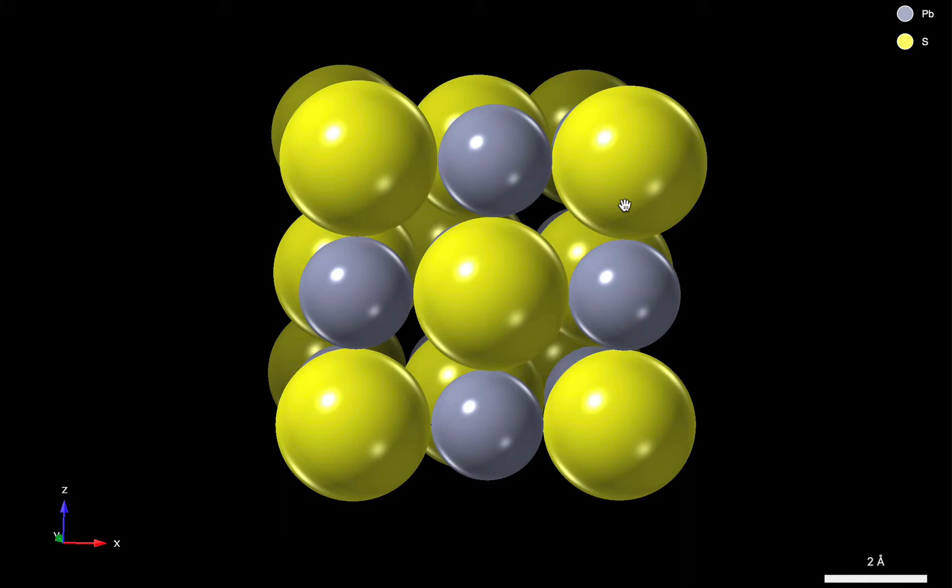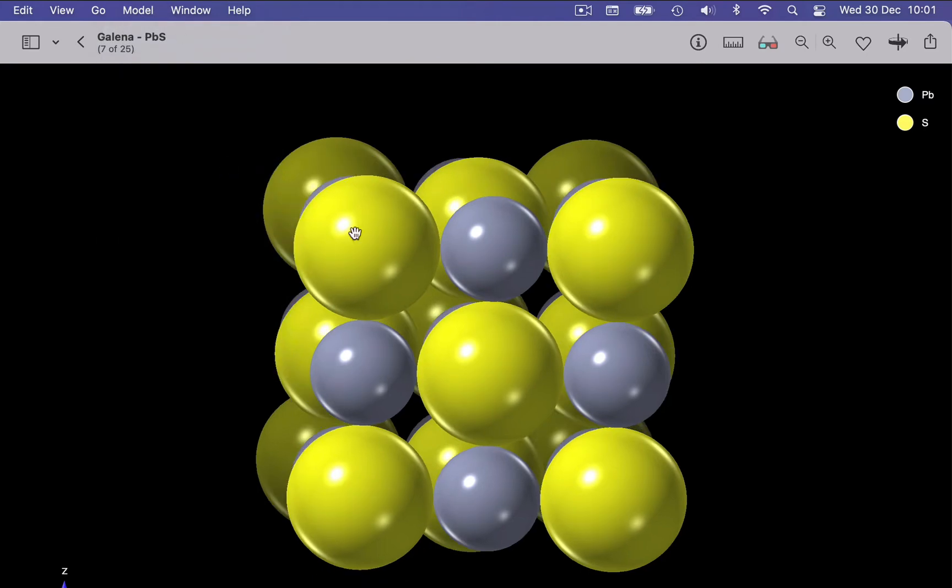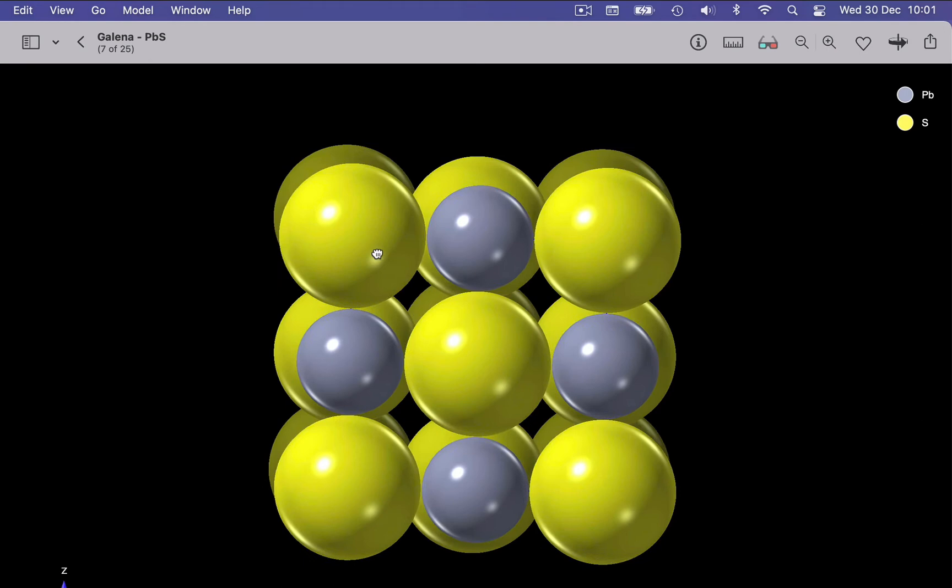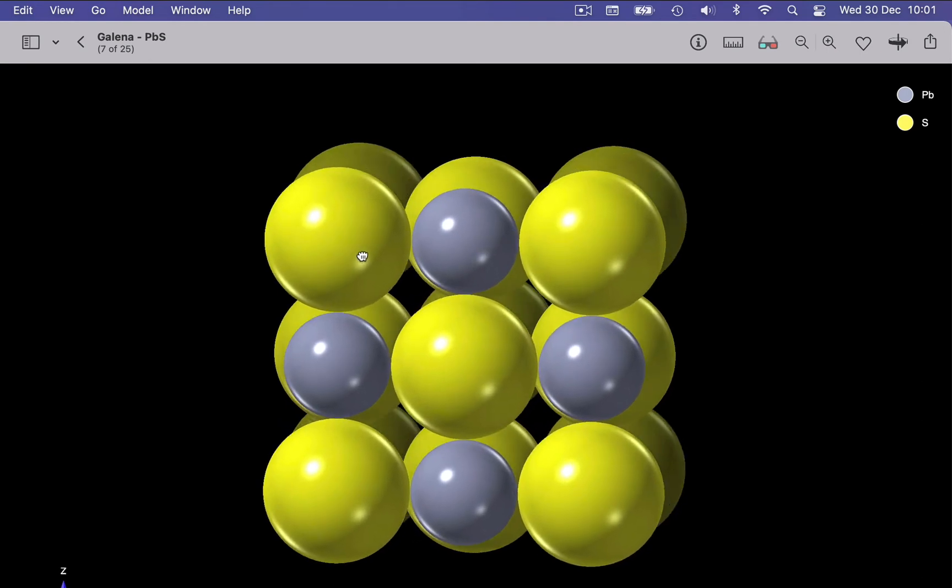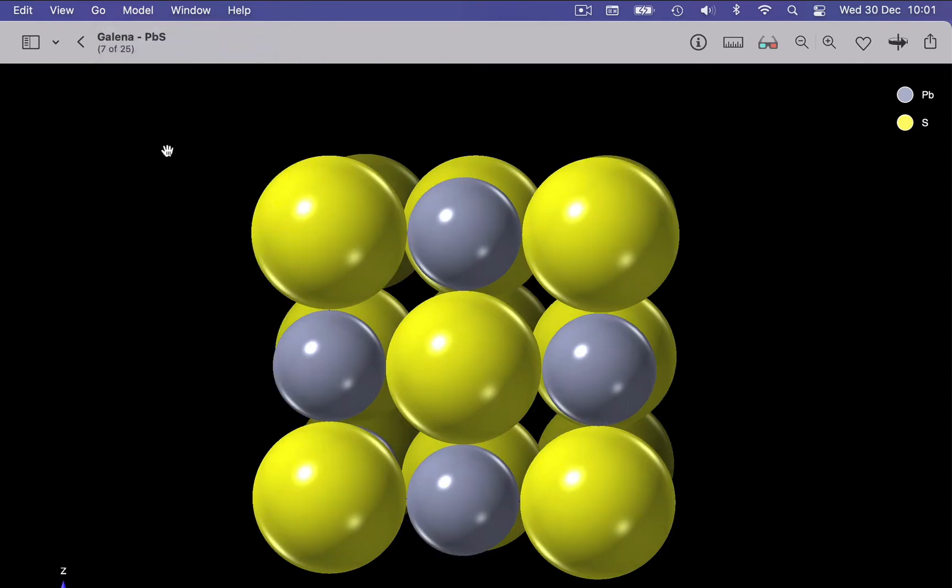You can toggle this on or off using the Model menu. Model. To turn perspective off, we choose an orthographic view. Now the back atoms are the same size as the foreground atoms. Good for measurement, but maybe not quite so good for visualisation. Let's go back to our perspective view.